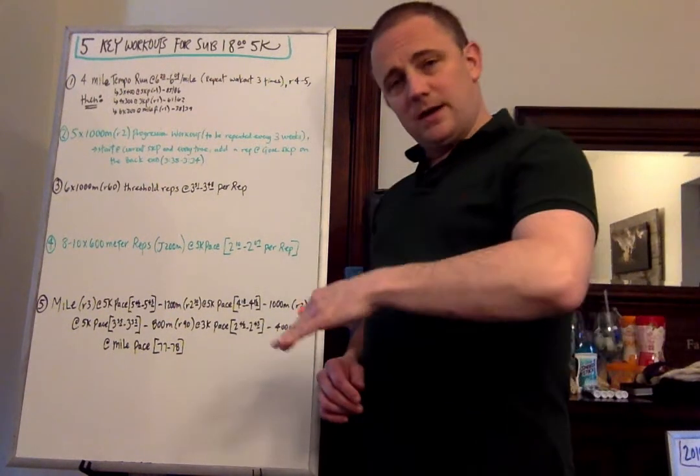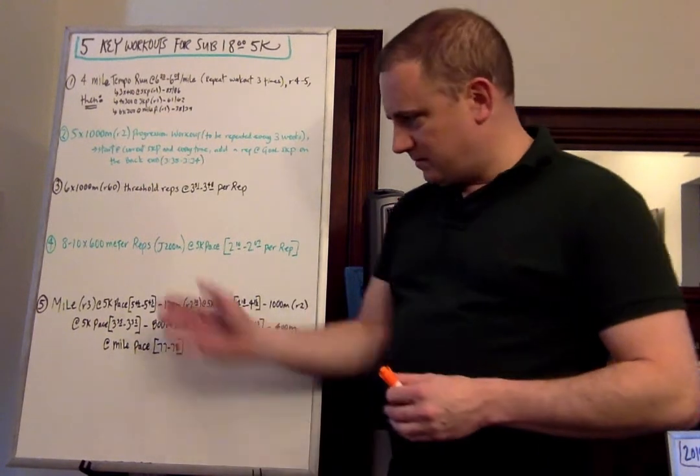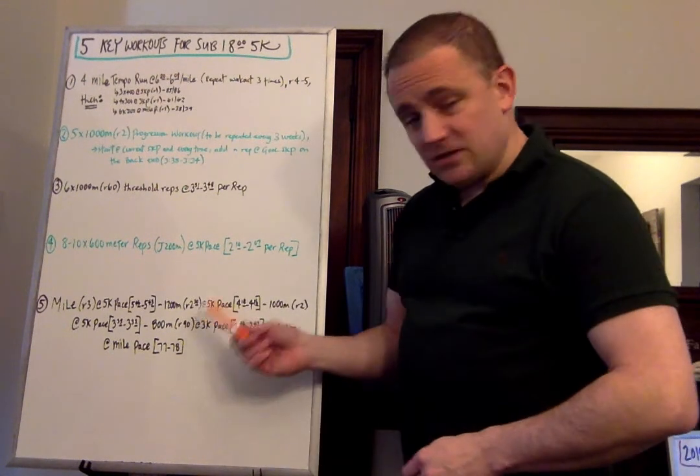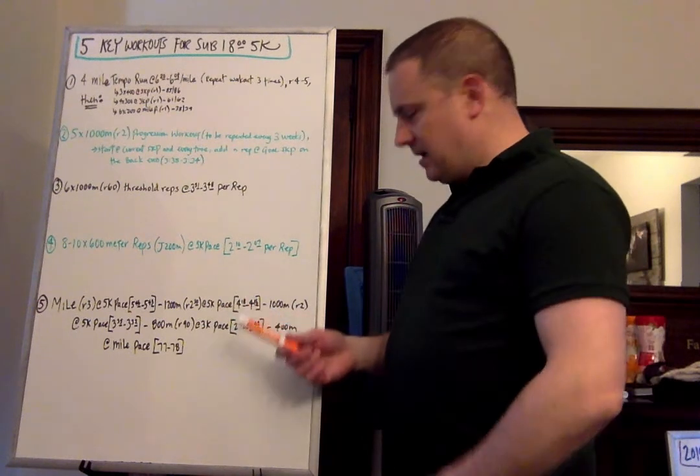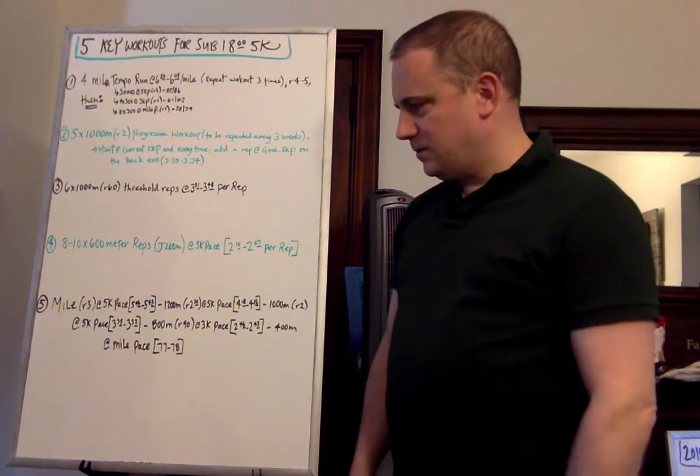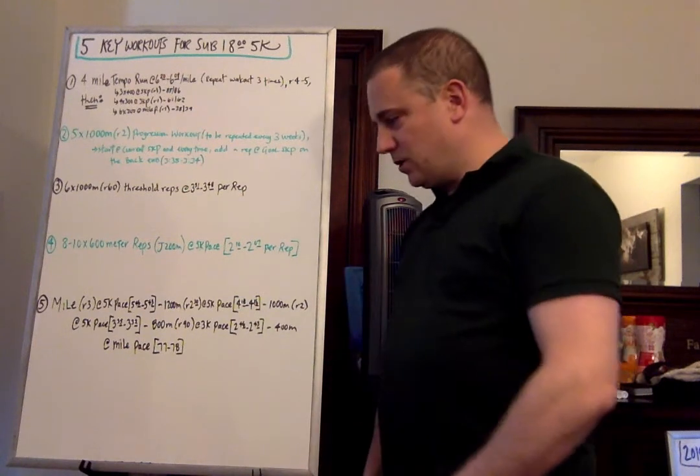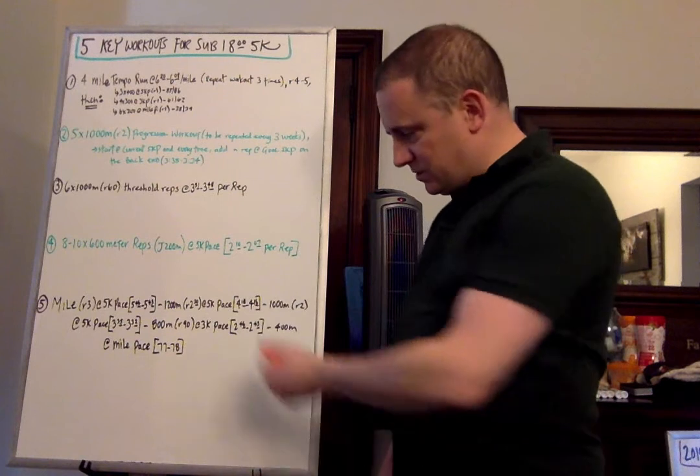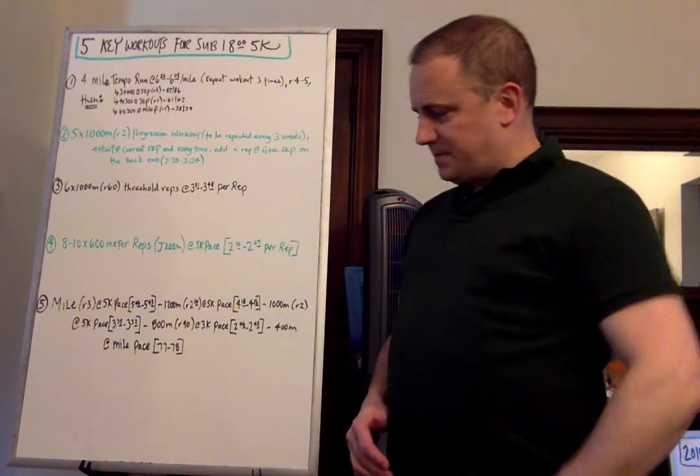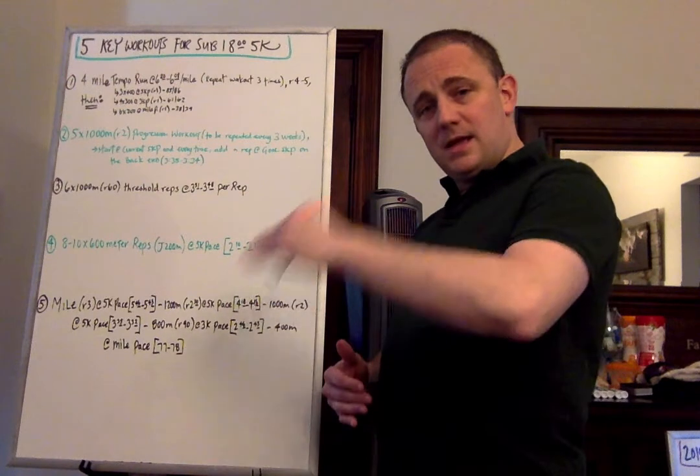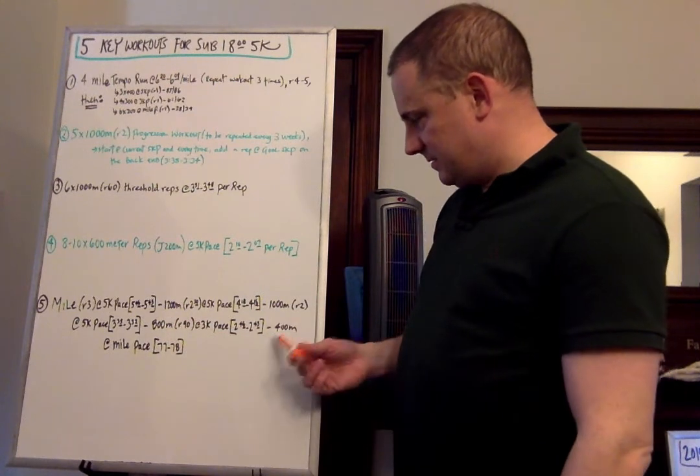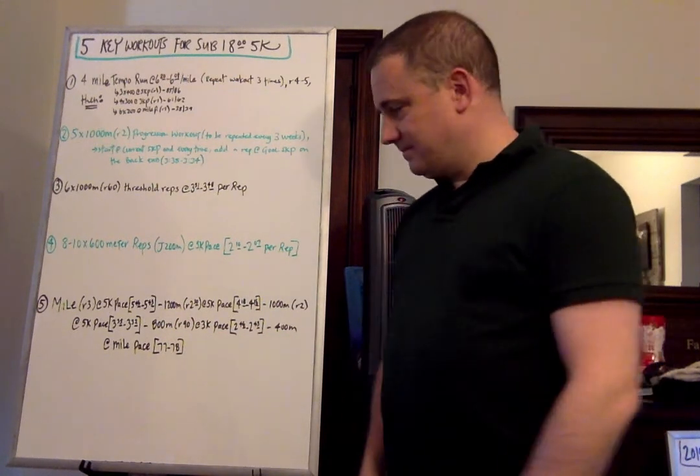Last workout is a cut-down workout. A mile at 5K pace, 5:46 to 5:43. Take a three-minute recovery. 1,200 meters at 5K pace with a 2 minutes and 30 seconds recovery at 4:18 to 4:16. Cut down to 1,000 with a two-minute recovery at 3:35 to 3:32, which is slightly faster than 5K pace. Now we're going to cut down to 800 meters with a 90-second recovery. We're going to do that at 3K pace, which in this case is 2:46 to 2:43. And then we're going to cut down again and do a 400-meter effort to finish it off at mile race pace, 77 to 78 per rep. So each rep gets shorter, and it gets faster. If you do the total volume at mile, 16, 28, 38, 46, 5,000 meters, at a progressively faster pace.